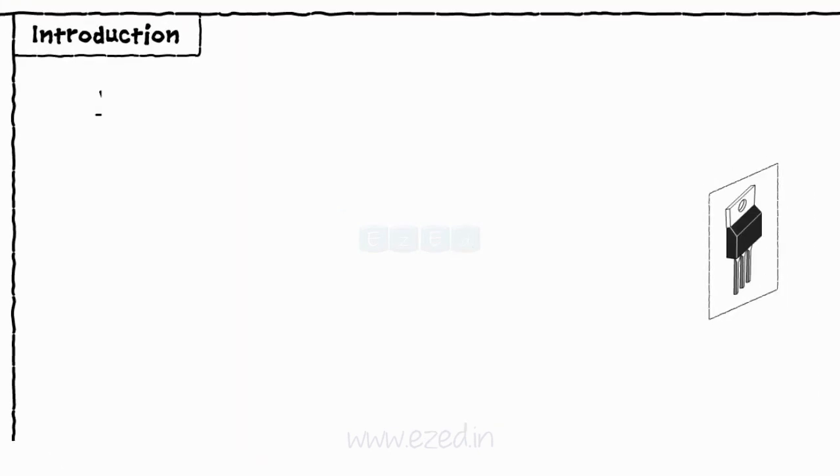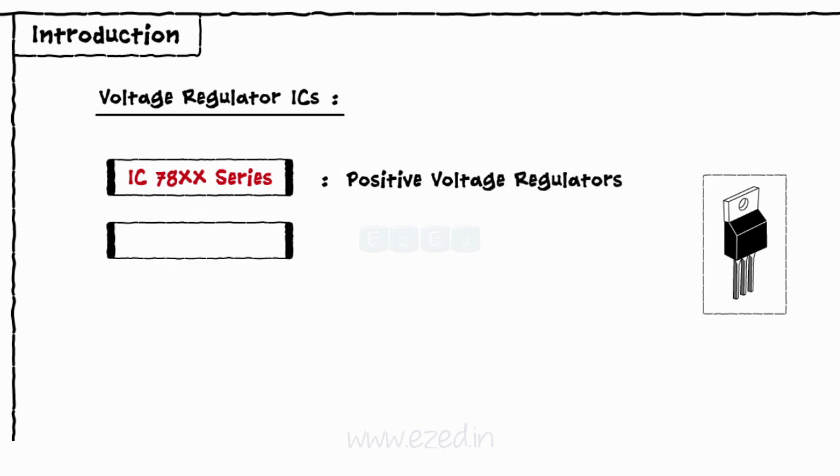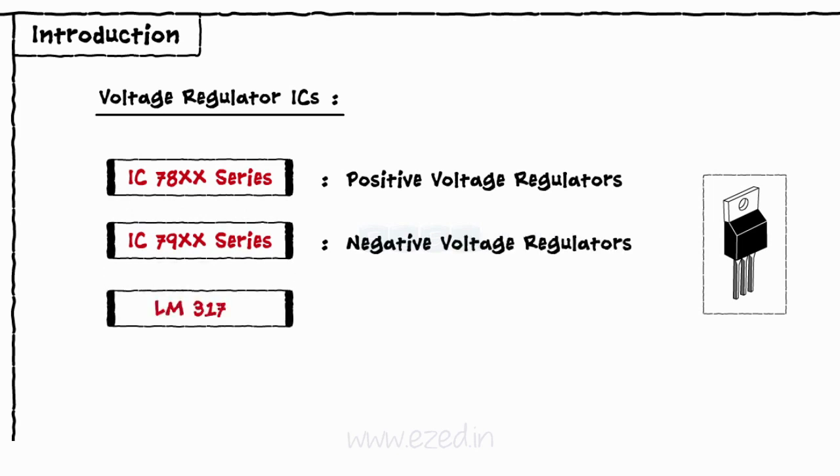There are three types of ICs which can be used as regulators: IC78XX series used as positive voltage regulators, IC79XX series used as negative voltage regulators, and LM317 used as adjustable voltage regulators.